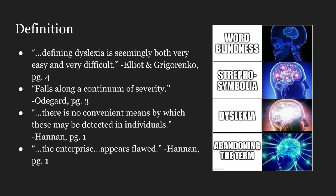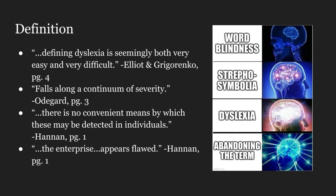The crux of this slide is how complex and broad the definition of dyslexia is, which is covered very well by this first quote: defining dyslexia is seemingly both very easy and very difficult. It's easy to have a broad definition of what kind of difficulty with reading it is, but trying to differentiate exactly who is dyslexic and what dyslexia is most specifically is something we still haven't been able to reach. There's no convenient means by which they may be detected in individuals — no easy way to try to do that. And that enterprise is flawed, as Hanan says.